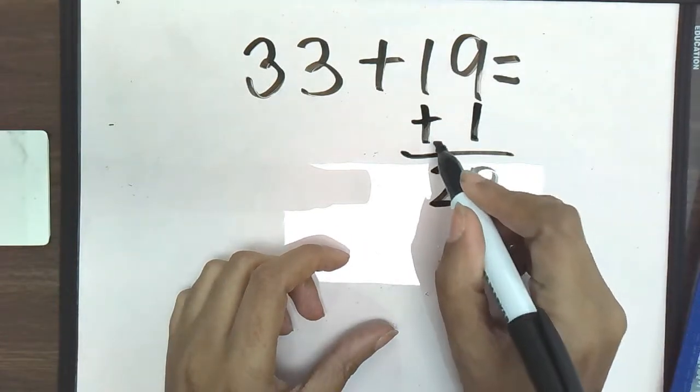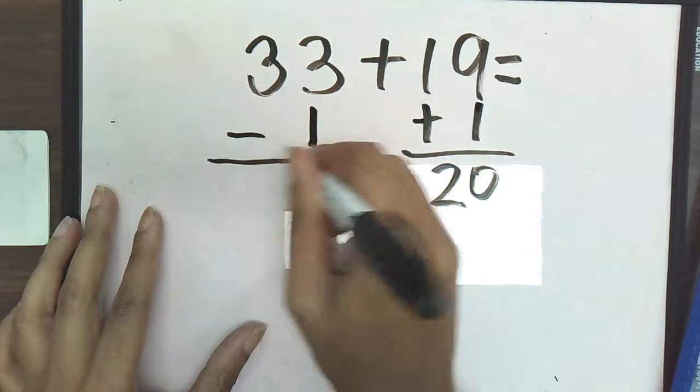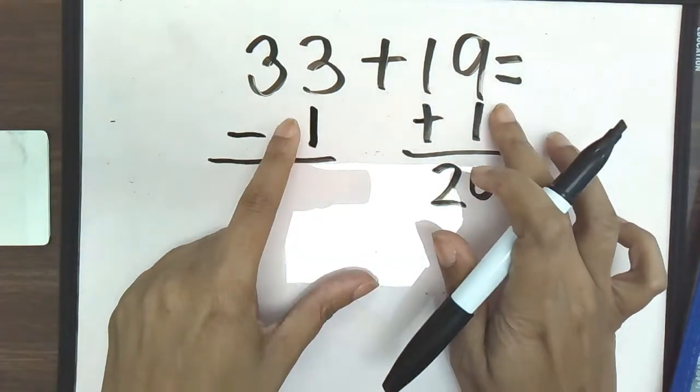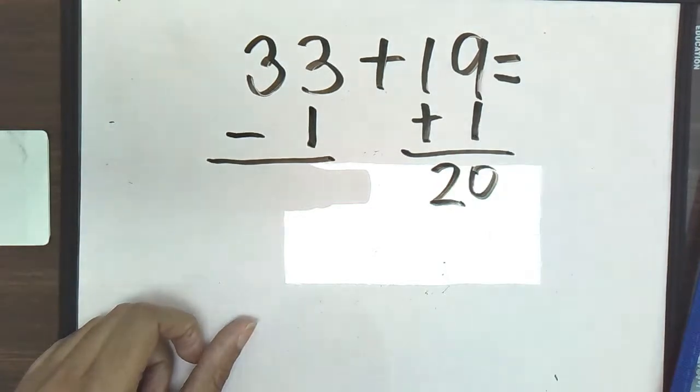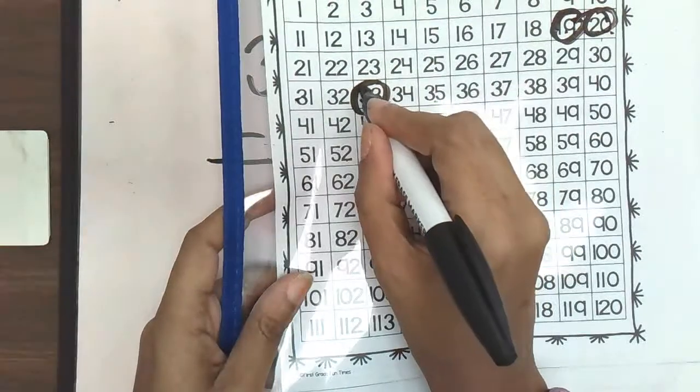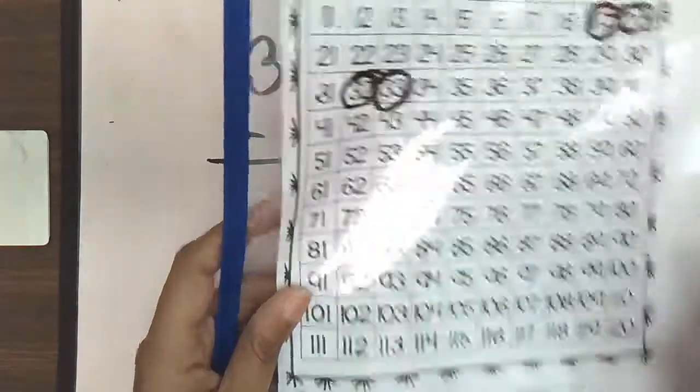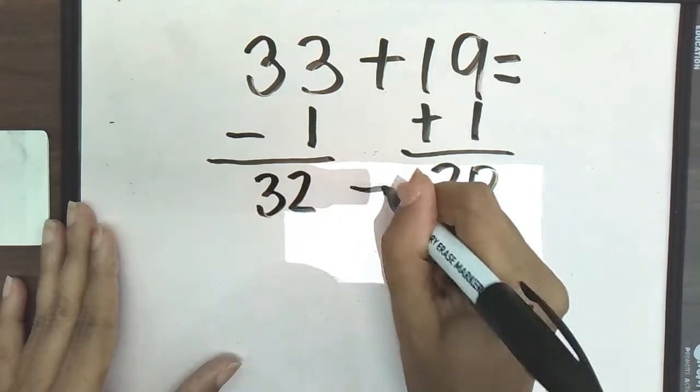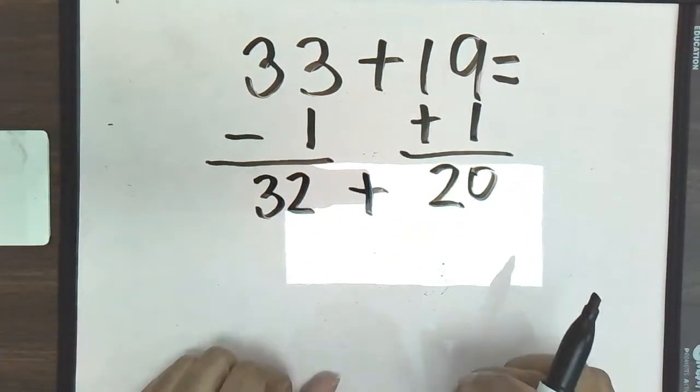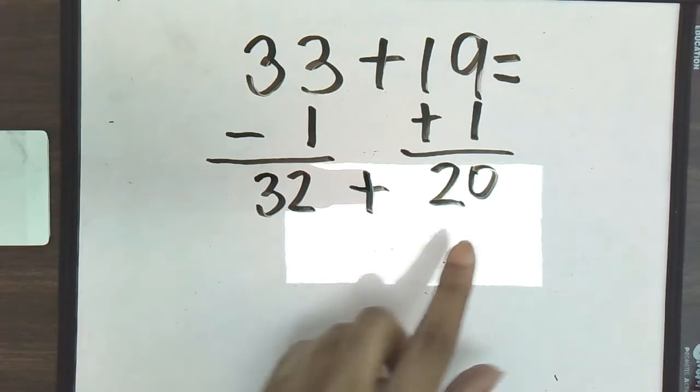So we are adding 1 to 19 to get us to our 10. So that means if we are adding 1 to this side, we have to compensate and subtract 1 from the other side. We're using the same number always. But if we add on one side, we always subtract on the other. So 33 minus 1, so when we subtract, we go to the left, minus 1 is going to be 32. And once again, now we need to put these two addends back together.